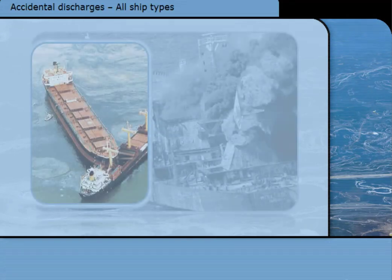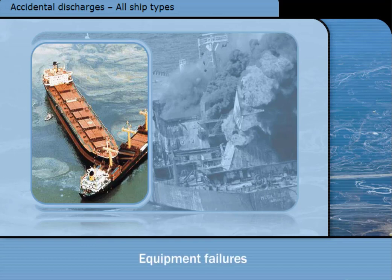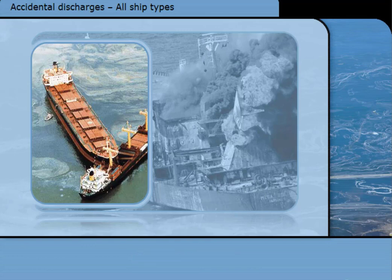We all know that accidents can happen, and Annex 1 tries to prepare for accidental discharges of oil from a ship. These include accidental discharges during oil transfer operations, following equipment failures, and following collision or grounding.